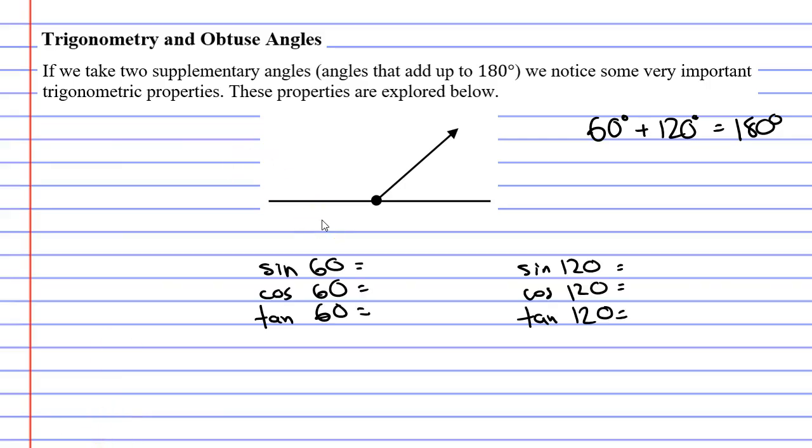Now, rather than me bringing up the calculator in front of you, I've actually solved these already. So we're going to have 0.866 for sin 60, cos 60 is 0.5, and tan 60 came to 1.732. Now, if these are the results we get on the left side for the angle of 60 degrees, what do you think we will get when you do 120 degrees?